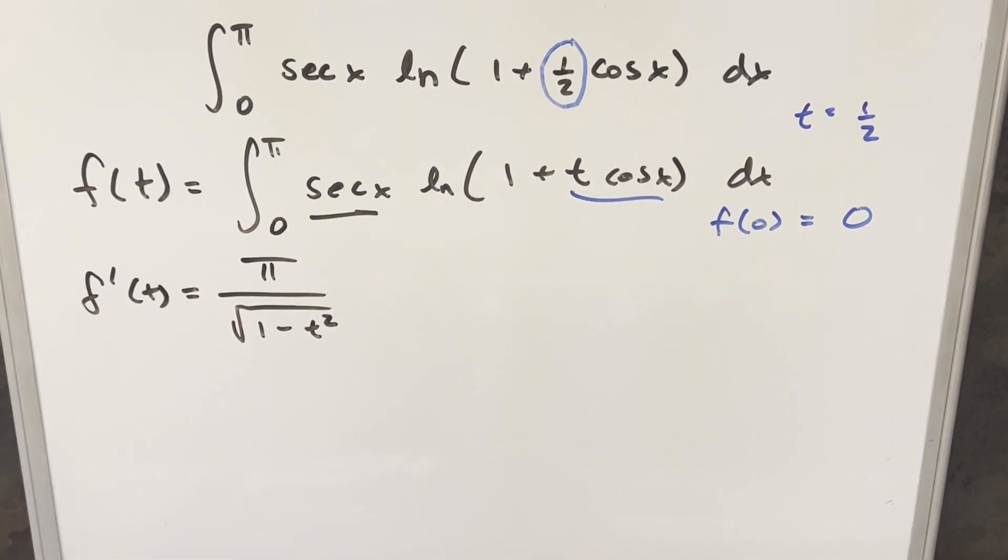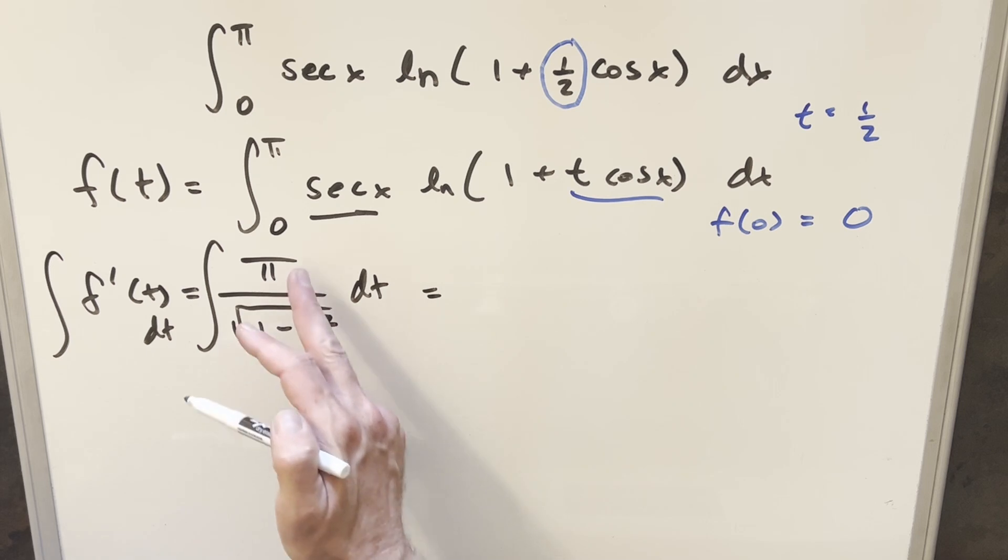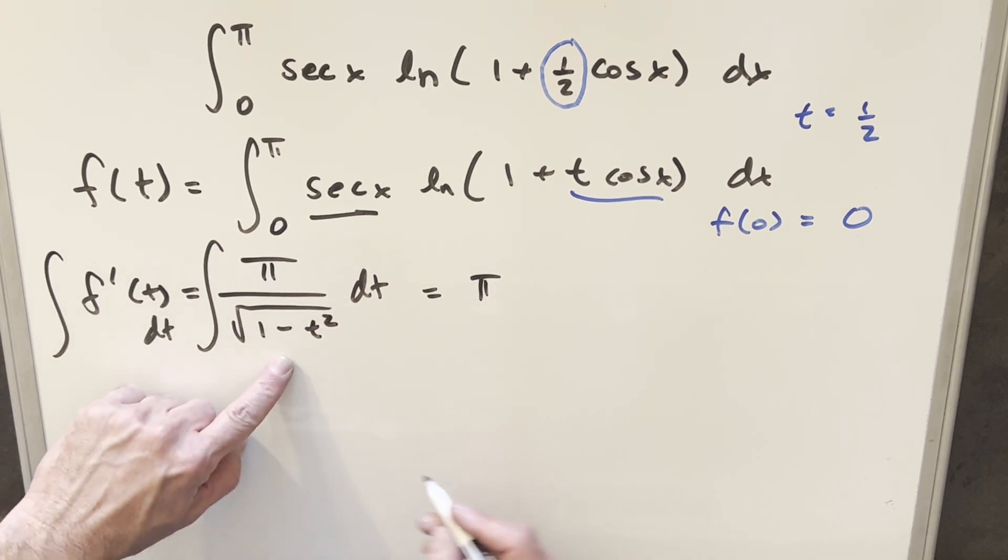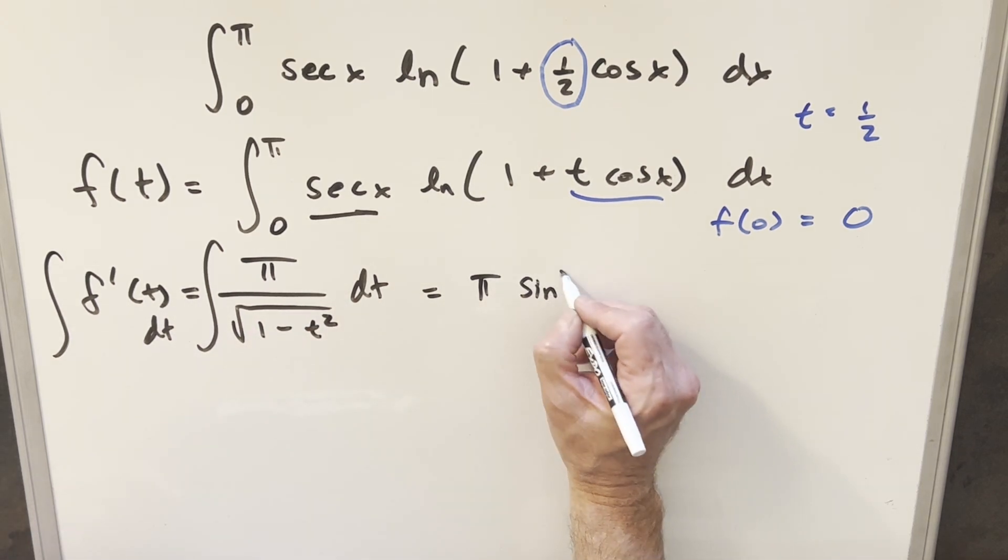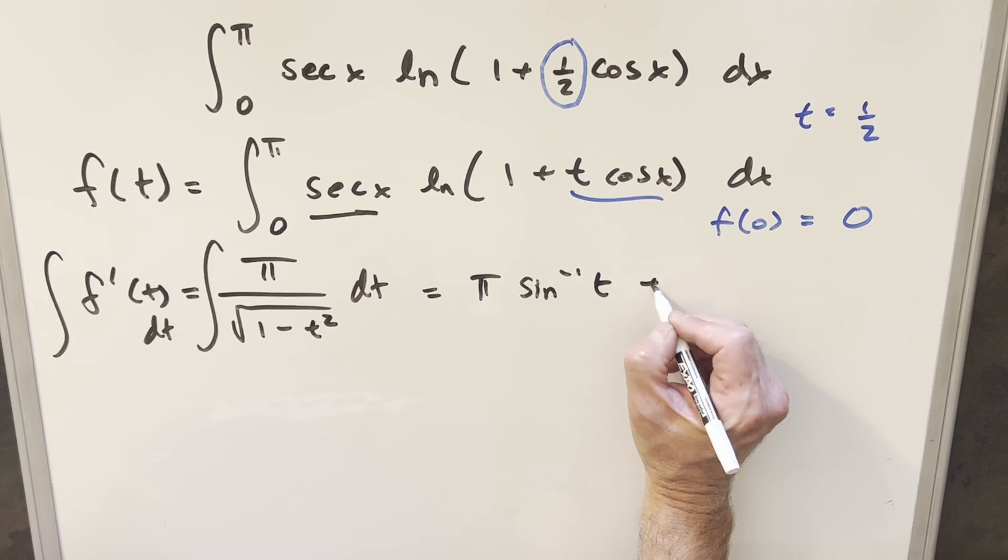Okay, but now at this point, what I need to do is I want to get this back to f of t because that's going to be our goal. Our goal is going to be f of one half. So if I just integrate here on both sides with respect to t, this is going to become, this is going to be known, pi is just a constant, so we have pi out front. This is just going to become arc sine of t plus c.